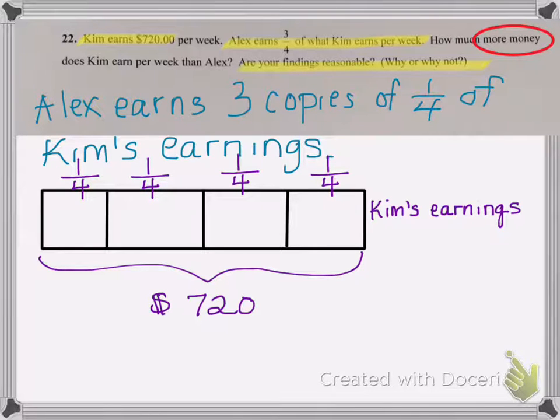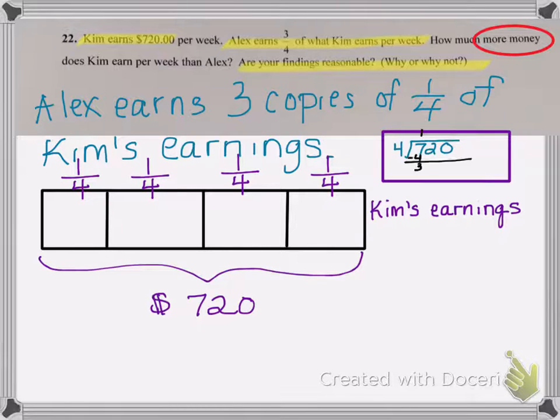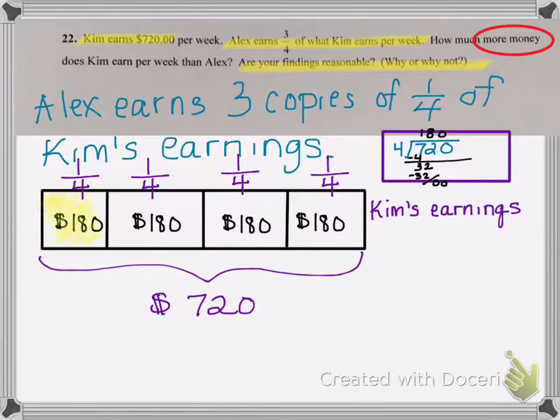Each part will represent one-fourth of her earnings. Now I also want to attach a dollar amount to that. So off to the side, I'm going to do 720 divided by four. 720 divided by four is 180. So in each one of those partitions is $180. So one-fourth of Kim's earnings is $180 because 720 divided by four is 180.